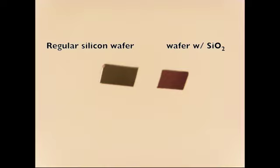If a plain silicon wafer with no silicon oxide layer is used in the experiment, the distinctive colors of graphite and graphene can't be observed.